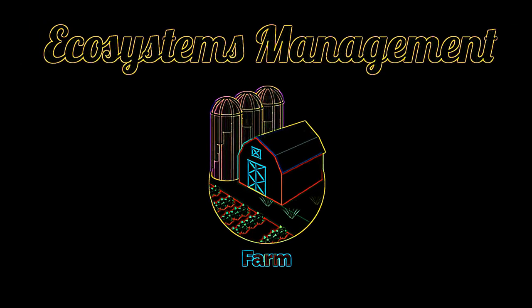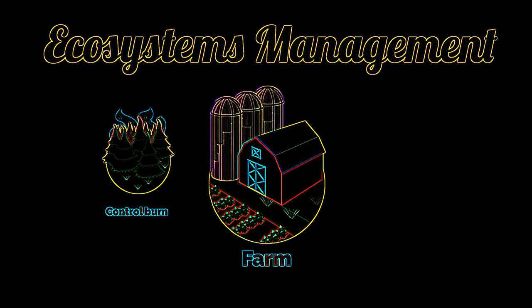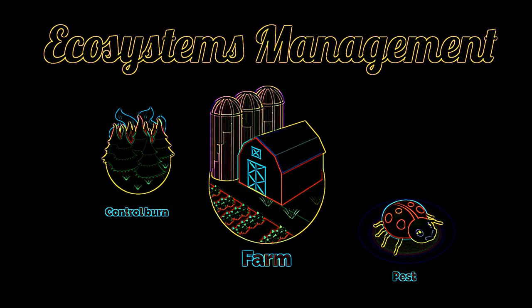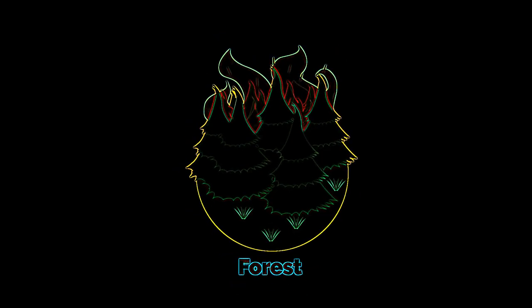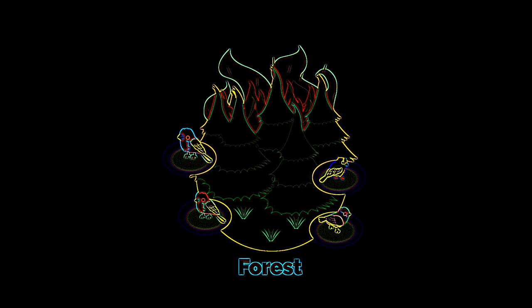Ecosystem management is achieved through a variety of measures, including controlled burns, pesticide application, and selected harvesting, or removal of a certain resource. In all of these cases, the action is designed to promote or prevent a specific goal. In the case of a controlled burn, those managing the ecosystem light small controllable fires so that the amount of fuel is kept to a low level. Without controlled burns as a form of management, wildfires can quickly spread out of control and destroy entire ecosystems.